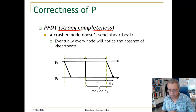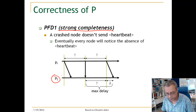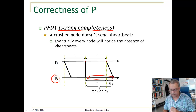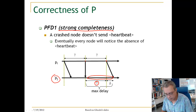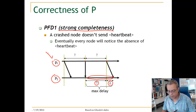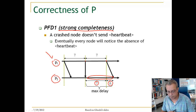Let's look at the correctness of P. For strong completeness, we look at the failure detector of process PI. Every other process, as long as it is alive, will send a heartbeat, which should be received at PI during each period. This period is gamma plus delta, where delta is the max transmission time. If PI crashes, it will not send a heartbeat, and eventually Pj will not see any heartbeats from PI and will declare PI as crashed.